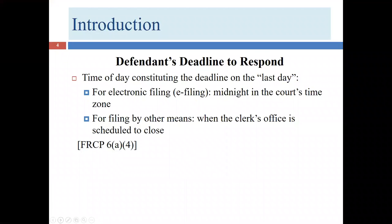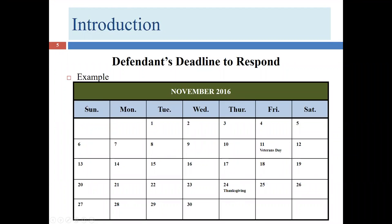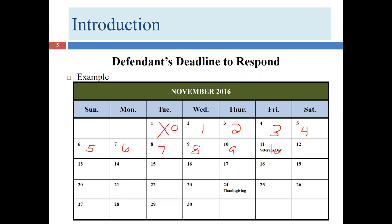Here's an example of how deadline calculation proceeds. If you get served on day zero—say the 1st of the month—you count: one, two, three, four (Saturday, still counts), five, six, seven, eight, nine, ten, eleven, twelve, thirteen, fourteen, fifteen, sixteen, seventeen, eighteen, nineteen, twenty, twenty-one. That final count gives you the date your answer is due.